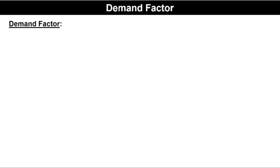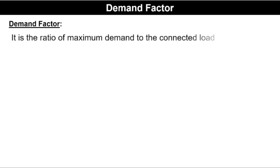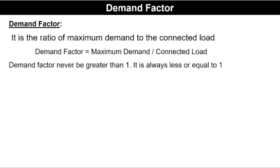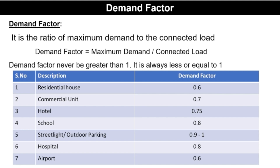Now we will see the demand factor. The demand factor is the ratio of maximum demand to the connected load. The demand factor is always less than or equal to 1, because the maximum demand is never greater than the connected load. The demand factor of various buildings: residential building — 0.6, commercial unit — 0.7, hotels — 0.75, schools — 0.8, street lighting and outdoor parking — 0.9 to 1.0, hospital — 0.8, and airport — 0.6.